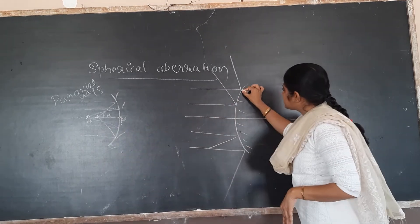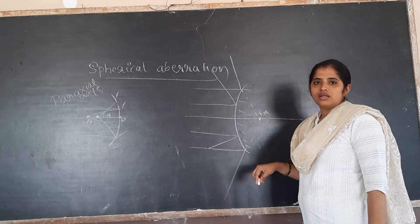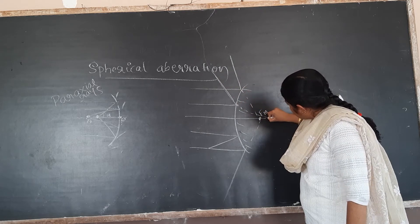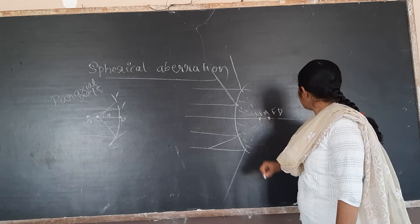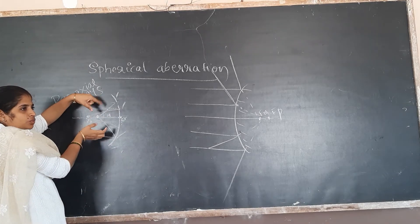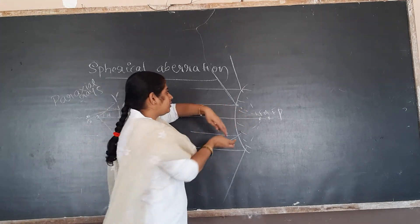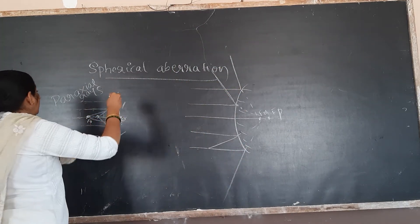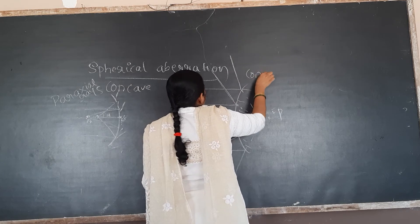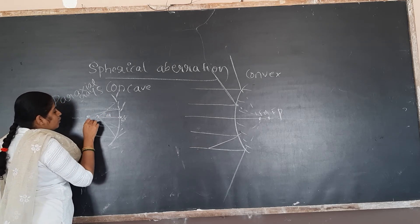So when you extrapolate these lines, you will get the focus. This is the marginal ray focus, and this is the paraxial ray focus. So this is the focus of the marginal ray FM, and this is the focus of the paraxial ray FP.